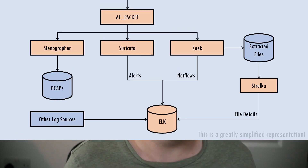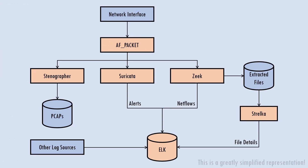The main components are AF packet, which is a means of capturing network traffic; Stenographer, to store those packet captures to disk for detailed analysis; Suricata, an IDS to analyse network traffic against signatures of known threats; Zeek, to record netflows, analyse application protocols and extract files; Strelka, to then analyse those files in detail; and an ELK stack to ingest, store and analyse the logs from the above network security systems, along with any host-based logs that you might want to throw at it.